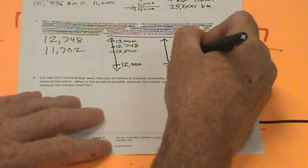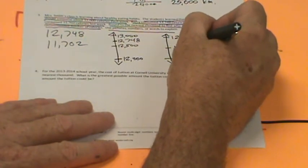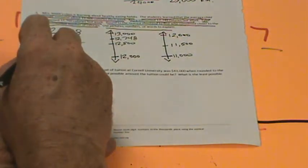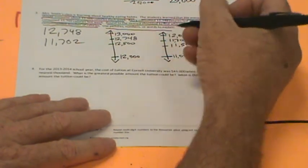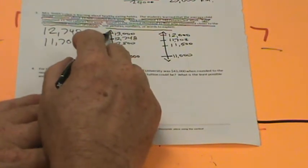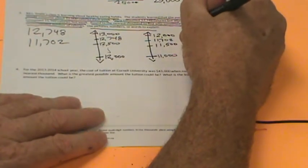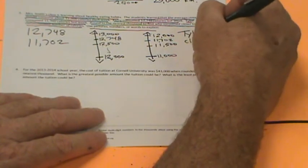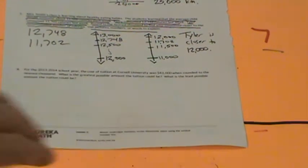Now let's do 11,702 to see if it's closer. We do 11,000 down here, 12,000 up here, and 11,500 in the middle. Where would 11,702 go? I think it would go right up here. It's greater than 11,500. Which one is closer to 12,000? This is 700 away, so it'd be rounded up to 13,000. This would be rounded up to 12,000. So it looks like Tyler is closer to 12,000.